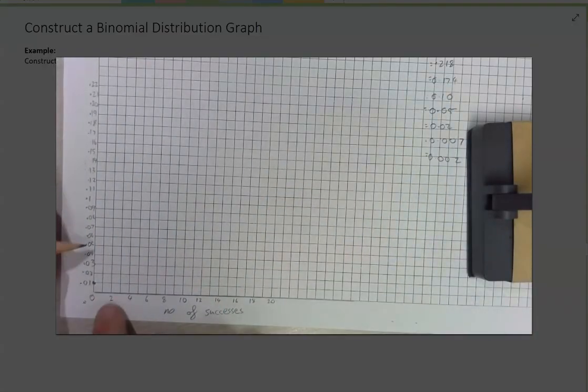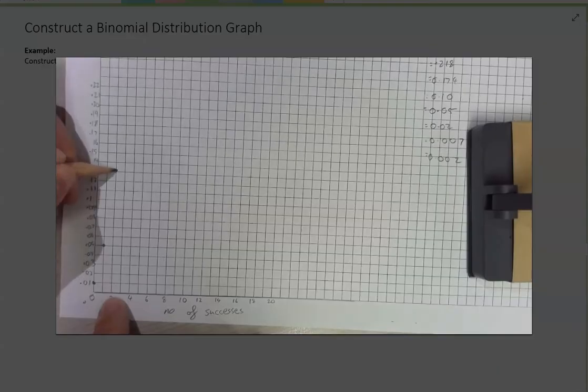My next point was 0.05, which was here. My next point was 0.13, 0.13, 0.20.